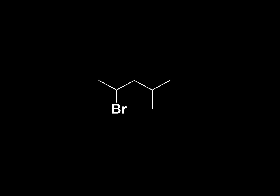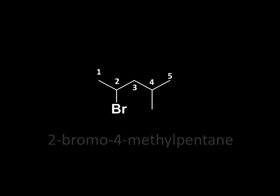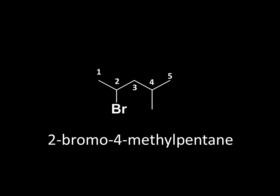How about this one — can you name this compound? We've got five carbons in the longest chain, so this is another pentane. We've got a bromine on C2. Our methyl group — that one-carbon branch — is now over here on C4. So this compound is 2-bromo-4-methyl pentane: bromine on C2, methyl group on C4.